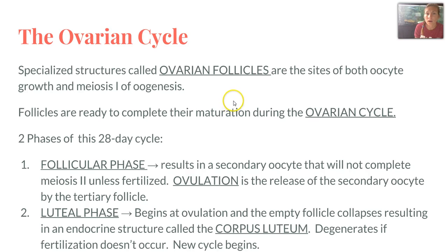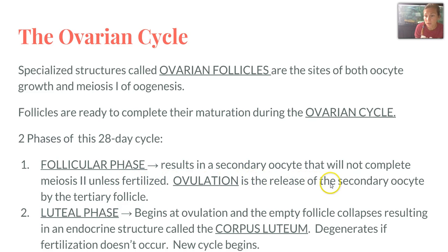The ovarian cycle occurs in specialized structures called ovarian follicles, which are the sites of oocyte growth and meiosis I of oogenesis. Follicles complete their maturation during the ovarian cycle, which occurs in two phases of 14 days each. The follicular phase results in a secondary oocyte that will not complete meiosis II unless fertilized. Ovulation is the release of the secondary oocyte by the tertiary follicle, beginning the luteal phase. The empty follicle collapses, resulting in an endocrine structure called the corpus luteum, which degenerates if fertilization doesn't occur, and the new cycle begins again.